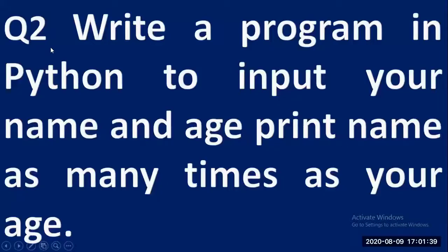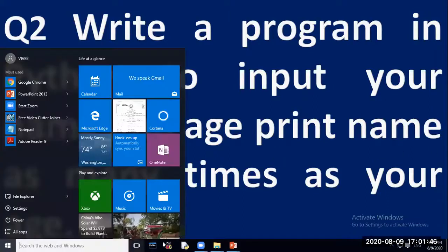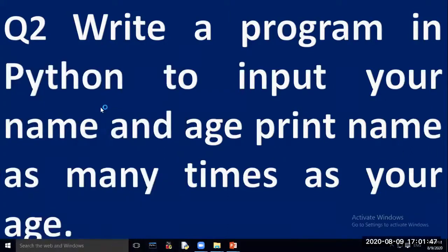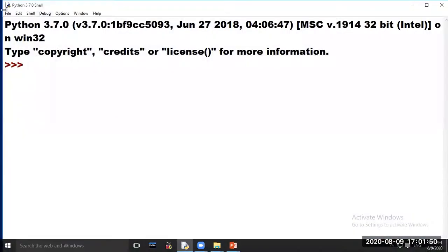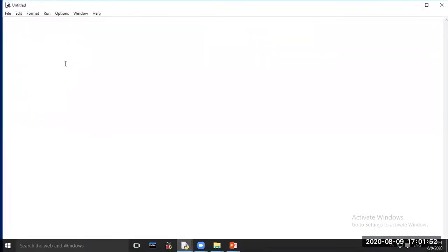Our second program is: write a program in Python to input your name and age, and print the name as many times as your age. Open Python software, click on option File, choose option New File, and type the program code here.